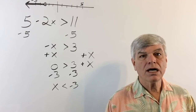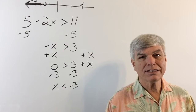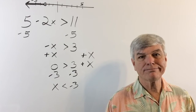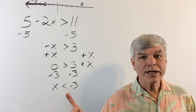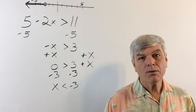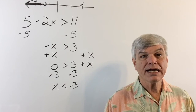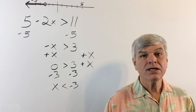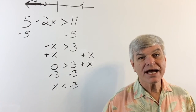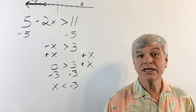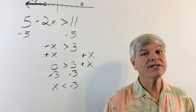Here's one more hint about which way the arrow goes if you're unsure. This only works when x is on the left-hand side. When you're reading x is less than negative 3, look at that inequality arrow — which way is it pointing? It's pointing the same way as the arrow on your graph. So the direction your inequality arrow is pointing is the direction you're going to go off in on the number line.